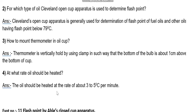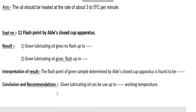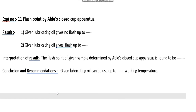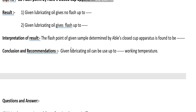Question four: at what rate should the oil be heated? The oil should be heated at a rate of 3 to 5°C per minute. Experiment number 11 is flash point by Abel's close cup apparatus. In the result, write down the temperature at which the lubricating oil gives no flash and the temperature at which it gives flash.